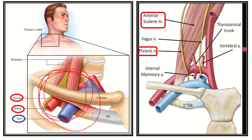In the second picture, we can see the anterior scalene muscle. Behind it is the subclavian artery. In front of the anterior scalene is the phrenic nerve. The phrenic nerve initially lies on the lateral side of the anterior scalene, then comes forward in front of the anterior scalene, and finally reaches the medial side of the anterior scalene muscle and descends down.